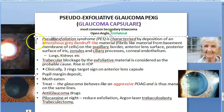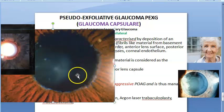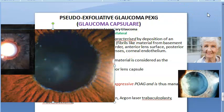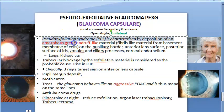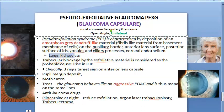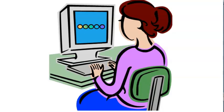Why is it called pseudo? Why is it not just exfoliation syndrome? Basically, this is dandruff-like material — amorphous gray dandruff-like, fibril-like material depositing here. You can see the pupillary margin and all these white materials — that is pseudo-exfoliator material. It will be found at the pupillary border, anterior lens surface, posterior surface of iris, zonules, ciliary processes, and it can also be present in other parts of the body, not only in the eye.